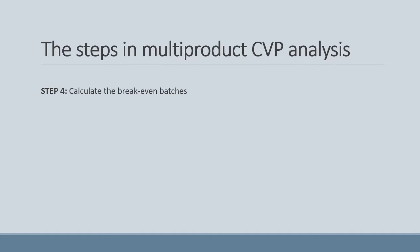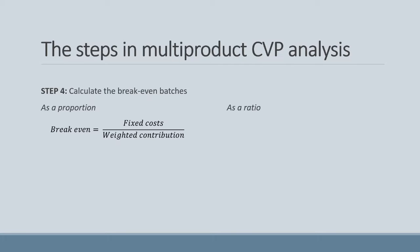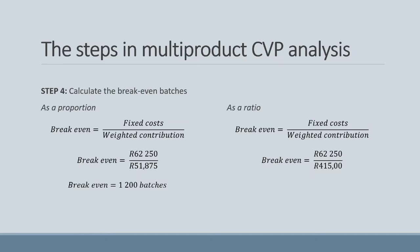Step 4 is to calculate the breakeven batches using the standard breakeven formula, but substituting the weighted contribution. For the proportion method, we divide fixed costs of 62,250 Rand by the weighted contribution of 51.875 Rand to arrive at 1,200 batches. Using the ratio method, we divide 62,250 Rand by 415 Rand to arrive at 150 batches. Dividing 1,200 by 150 gives 8, consistent with our batch sizes.